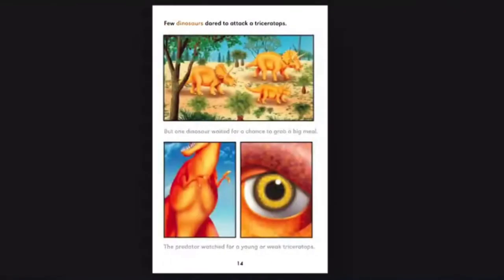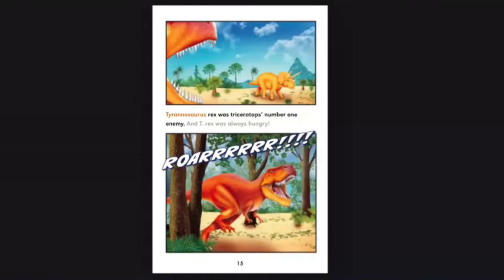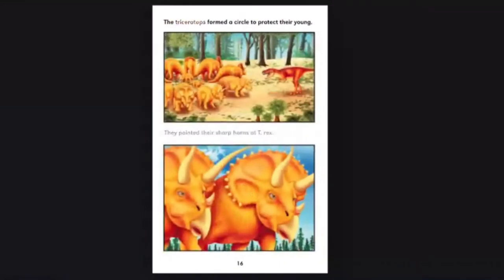Few dinosaurs dared to attack a Triceratops. But one dinosaur waited for a chance to grab a big meal. The predator watched for a young or weak Triceratops. Tyrannosaurus rex was Triceratops' number one enemy, and T-Rex was always hungry.